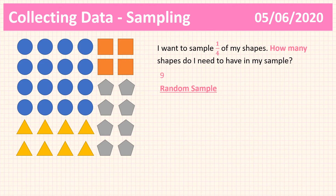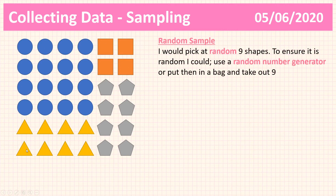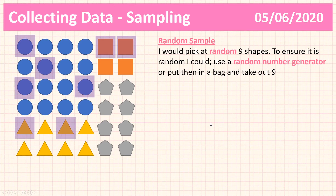We'll begin with random sampling. A random sample means I would pick nine shapes at random from my population. I would make sure it was random by using a random number generator on a computer, calculator, or app on a phone — or I could just put them in a bag, shake it up, and take out nine shapes quickly. This ensures randomness, because if I tried to pick manually, I might have some underlying bias in my selection. I've now taken a random sample of our 36 shapes and selected nine shapes.